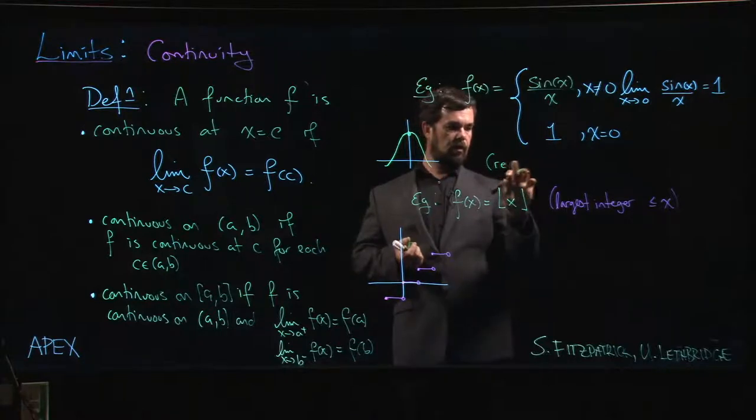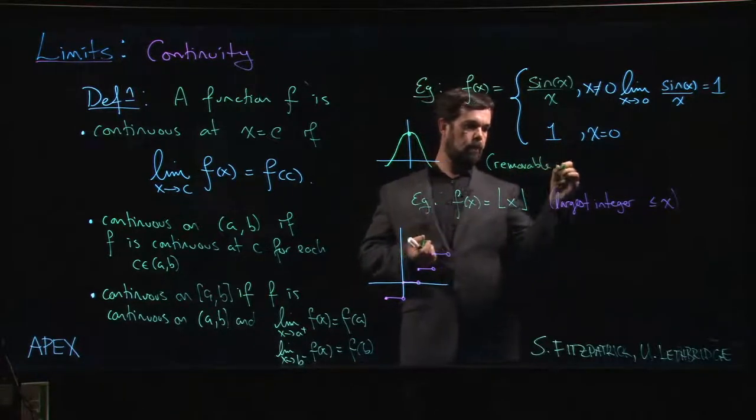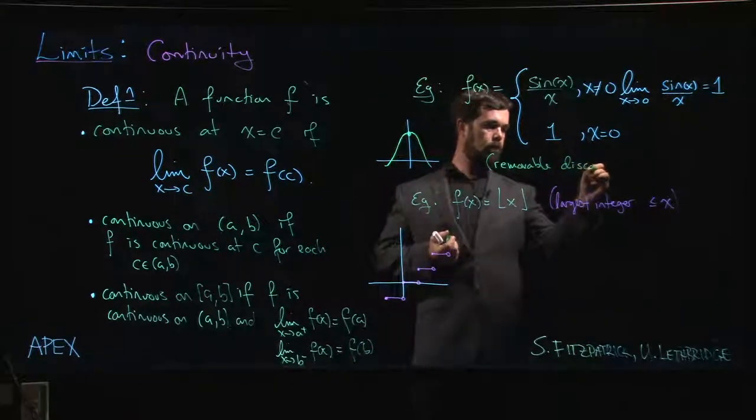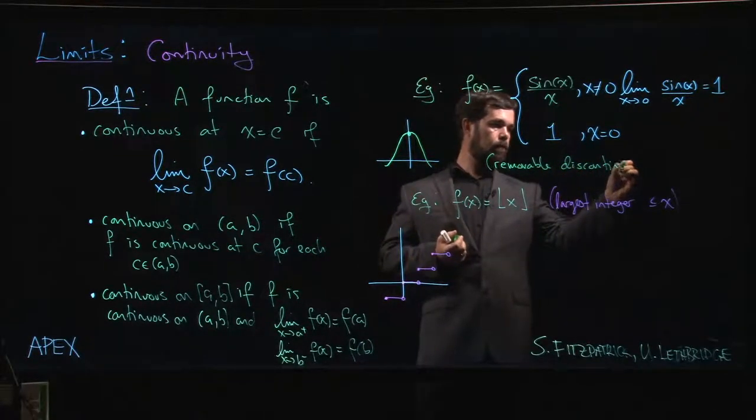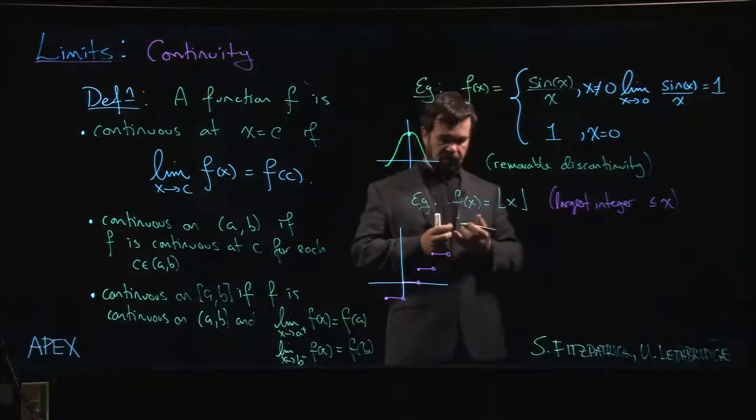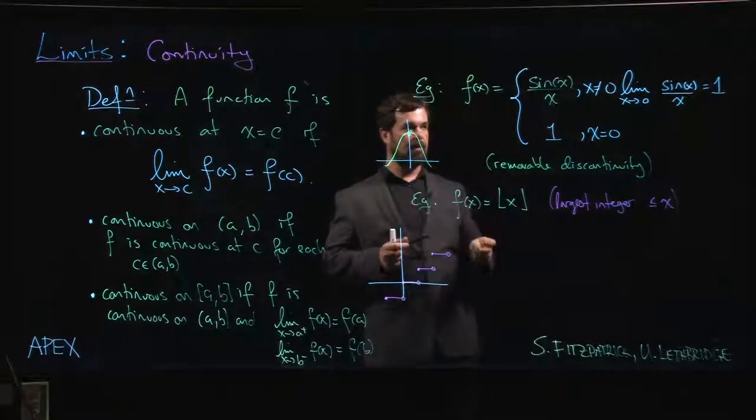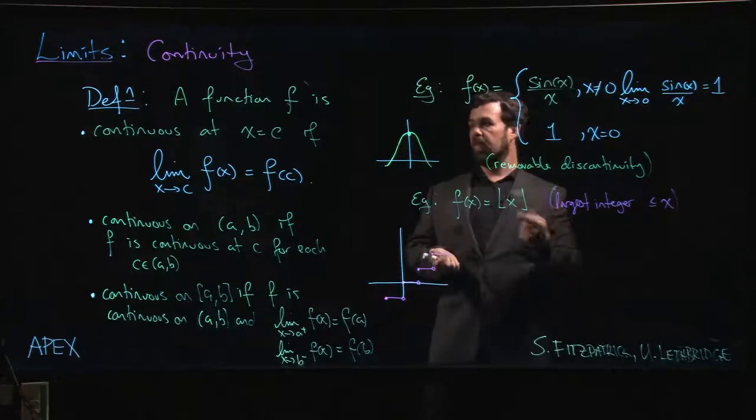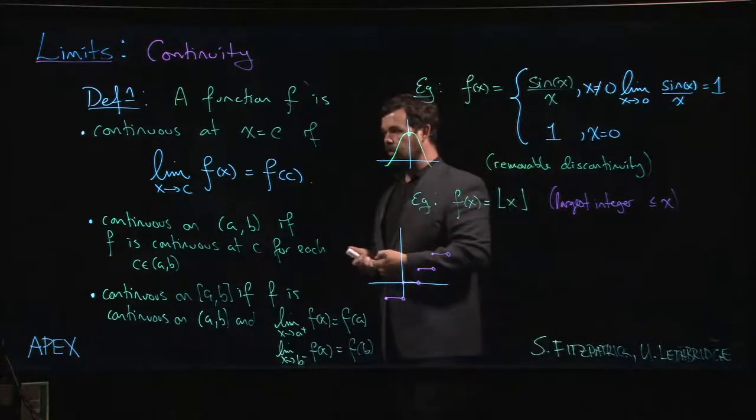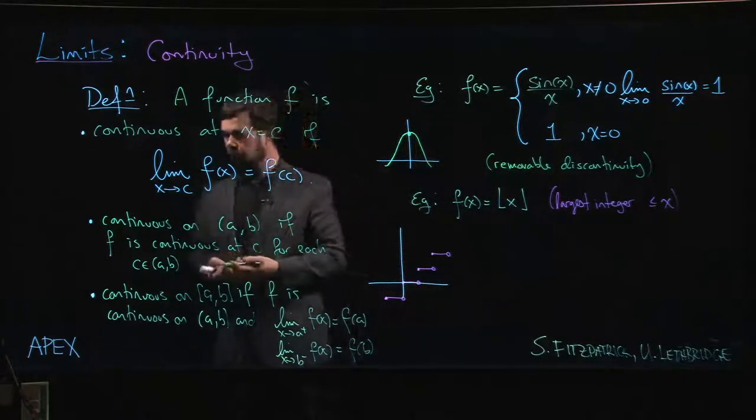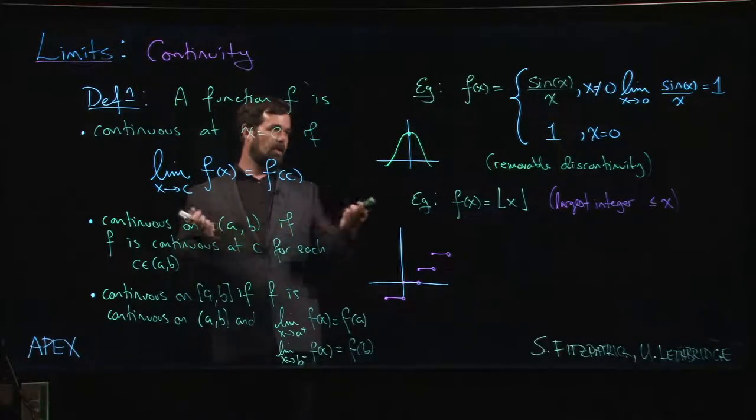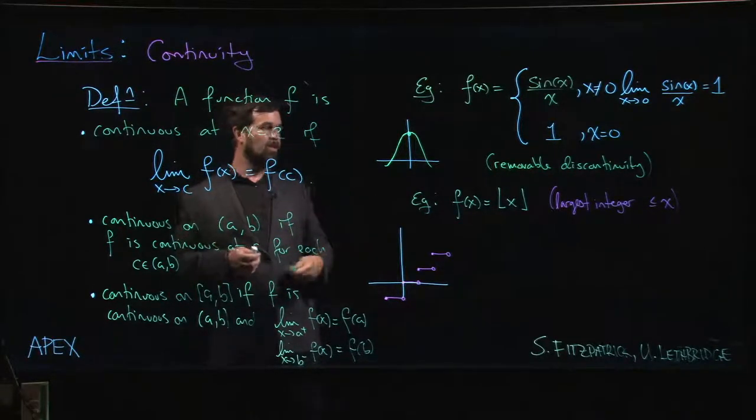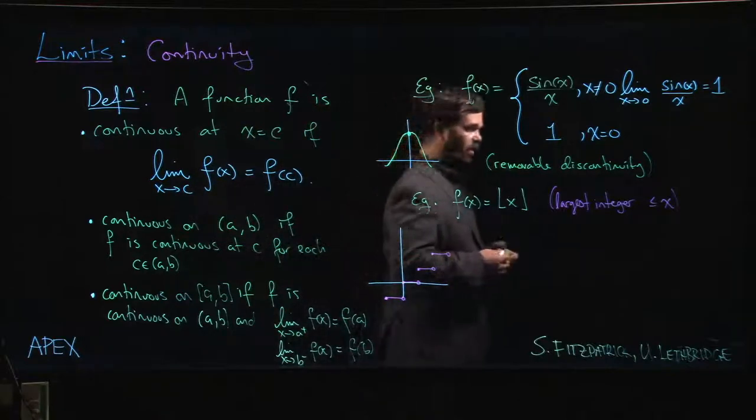The name removable comes from the fact that by simply changing the function at one point you can get rid of the discontinuity and give yourself a continuous function. Now from here we could say that this is continuous - we know that it's continuous at zero.